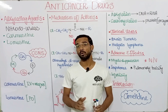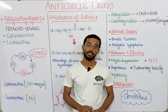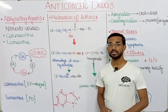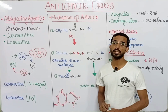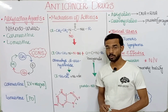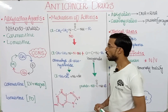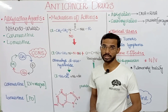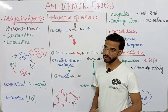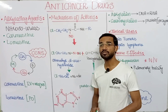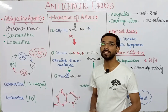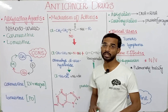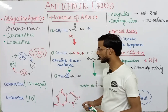In the nitrosoureas, the two most important drugs are carmustine and lomustine. In these nitrosourea drugs, you see two most important groups: the nitro group and the urea group. These drugs are actually cell cycle non-specific drugs — they act on both dividing and non-dividing cells, but the main cytotoxic effect will be on the dividing cell.